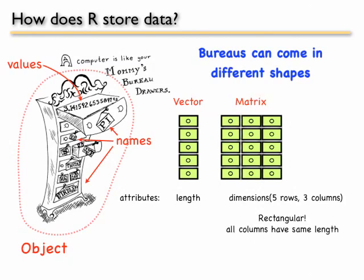A matrix is just like a multiplied vector. Now you have three vectors put right together. So now you have rows and columns. And a matrix has another attribute called dimension. So dimension has rows and columns. And another thing about matrices is that they're rectangular. So all of the columns have to have the same length.